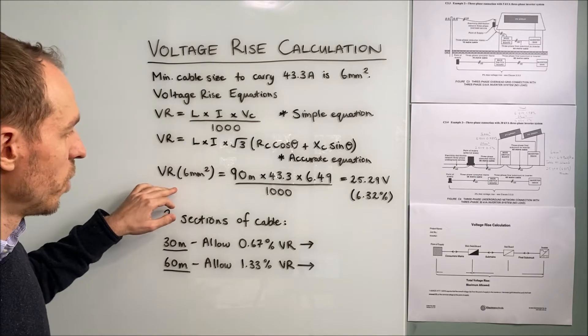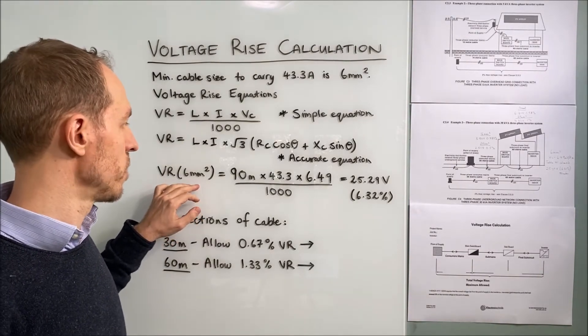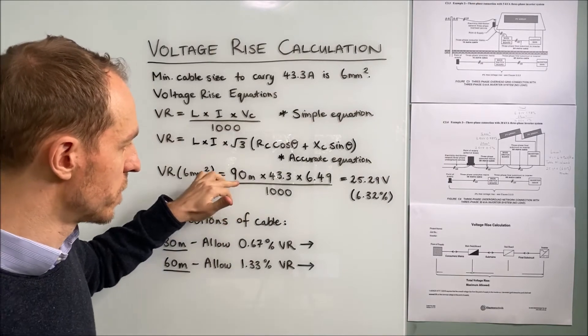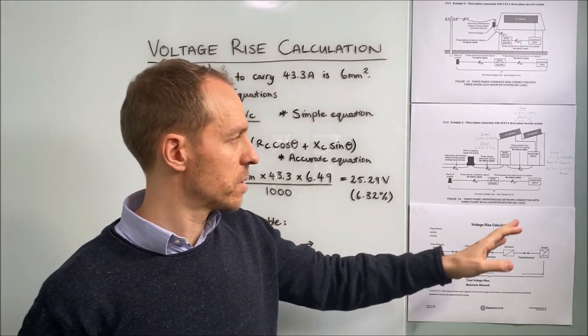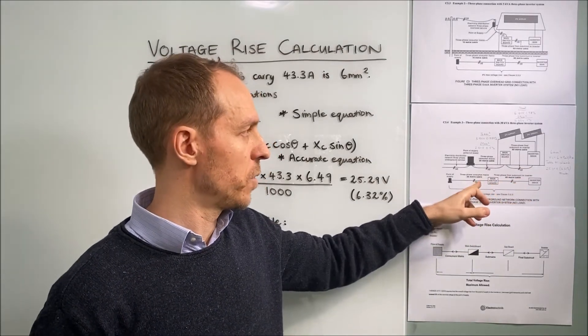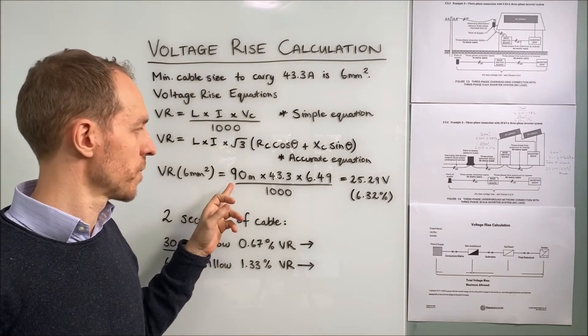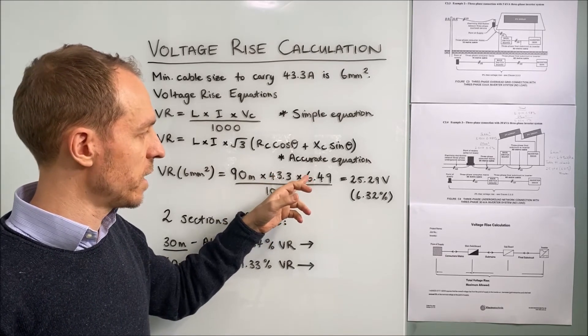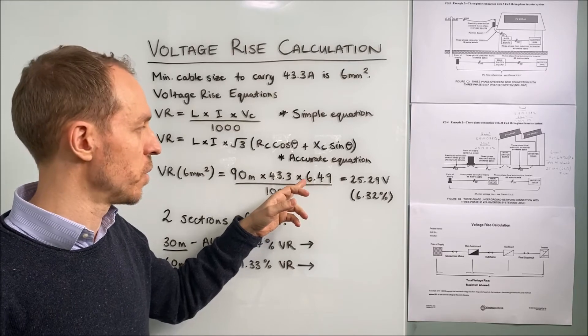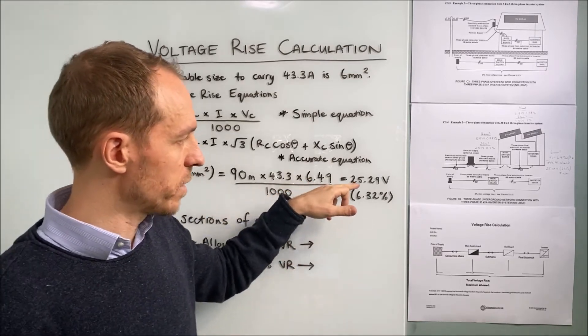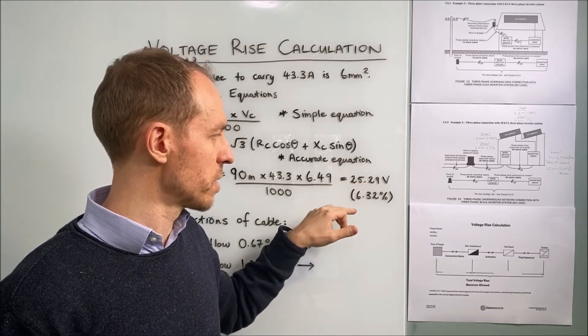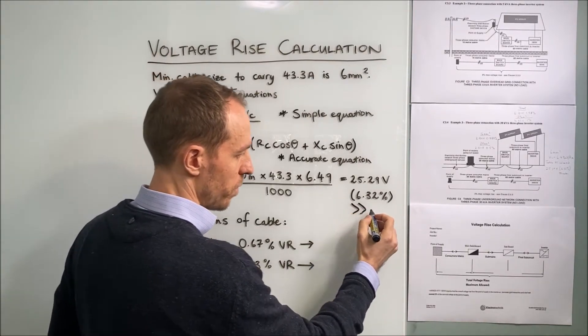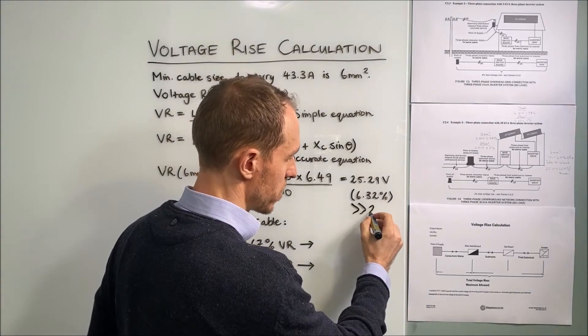So first thing we'll work out the voltage rise for our minimum cable size of 6 square millimeters. We're going to use this simple equation. We've worked it out for the total length of run which is two sections, one 60 meter section and one 30 meter section. Combined that gives us 90 meters. Our inverter output current of 43.3 amps. We've taken our VC value from the standard 6.49 all divided by a thousand. We've worked that out to be 25.29 volts or 6.32 percent which is much greater than our allowable requirement of 2%.